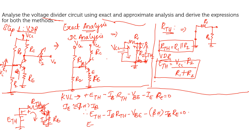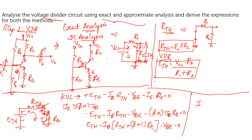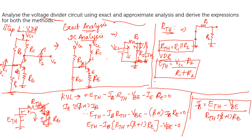Taking IB as common: ETH minus IB into [RTH plus (beta + 1) into RE] minus VBE equals zero. From this, IB is equal to ETH minus VBE divided by [RTH plus (beta + 1) into RE].